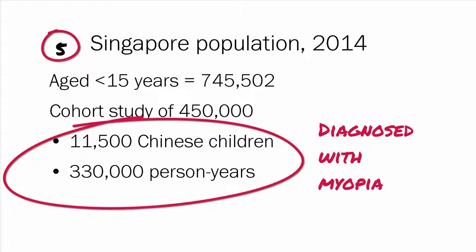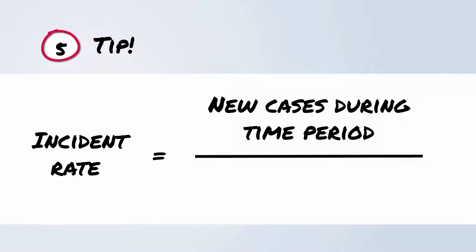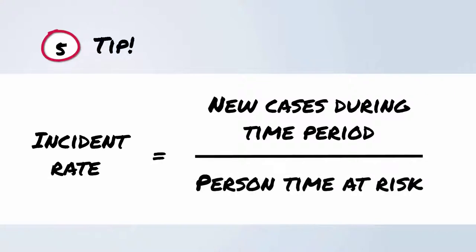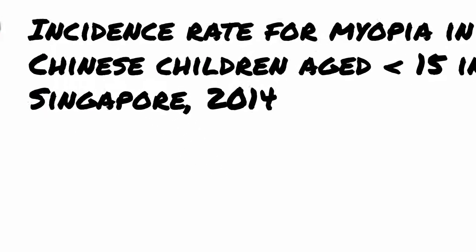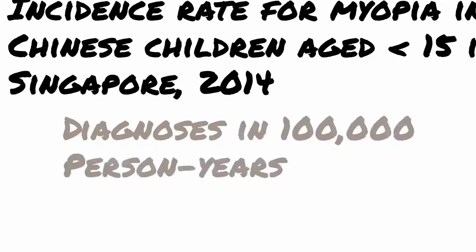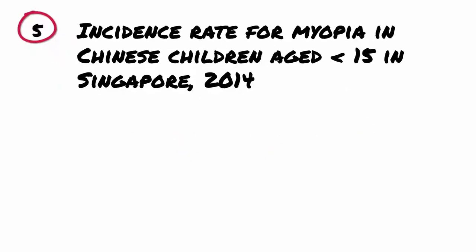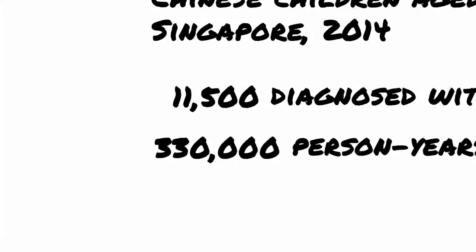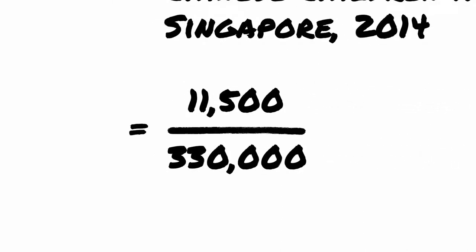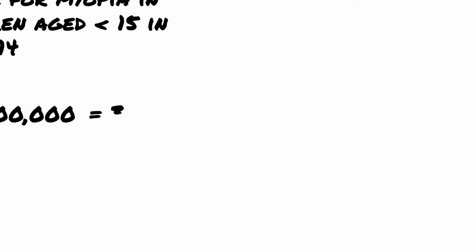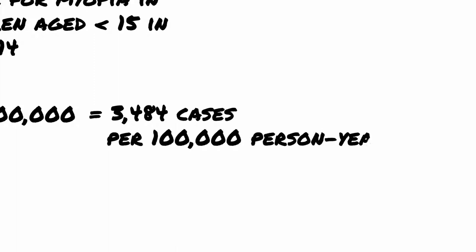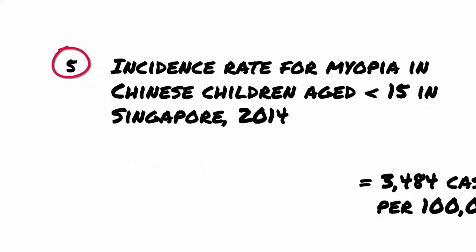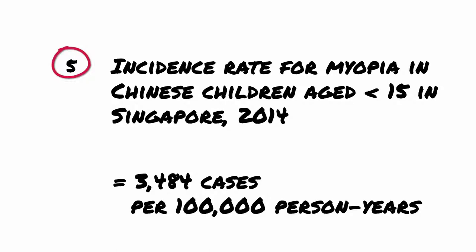11,500 Chinese children with a total of 330,000 person-years were diagnosed with myopia. Let's calculate the incidence rate of myopia in Chinese children in 2014. When we calculate incidence rate, the number of new cases is still the numerator, but the denominator is not the total population at risk during the time period, but the person time at risk. In this case, we want to know how many diagnoses there were in 100,000 person-years, which is the same as 100,000 children in one year. We divide 11,500 by 330,000 and multiply by 100,000 to give an incidence rate of 3,484 per 100,000 person-years. We know that this is approximately correct because the rate is about one-third of 11,500, just as 100,000 is about one-third of 330,000.